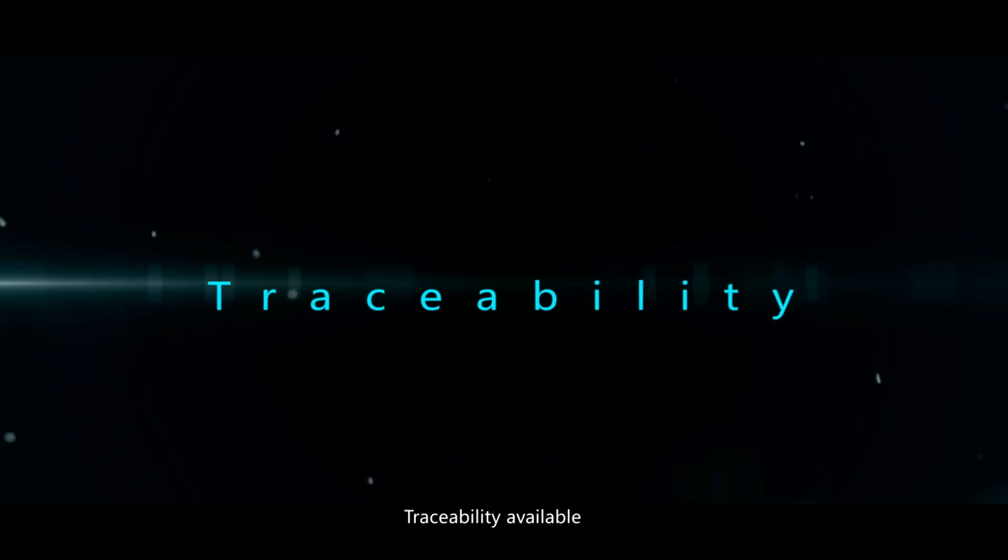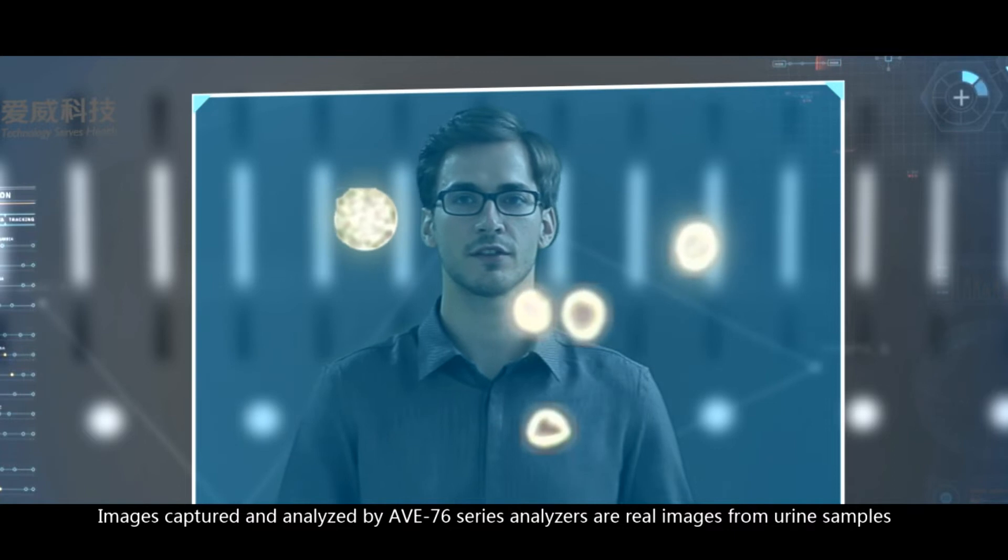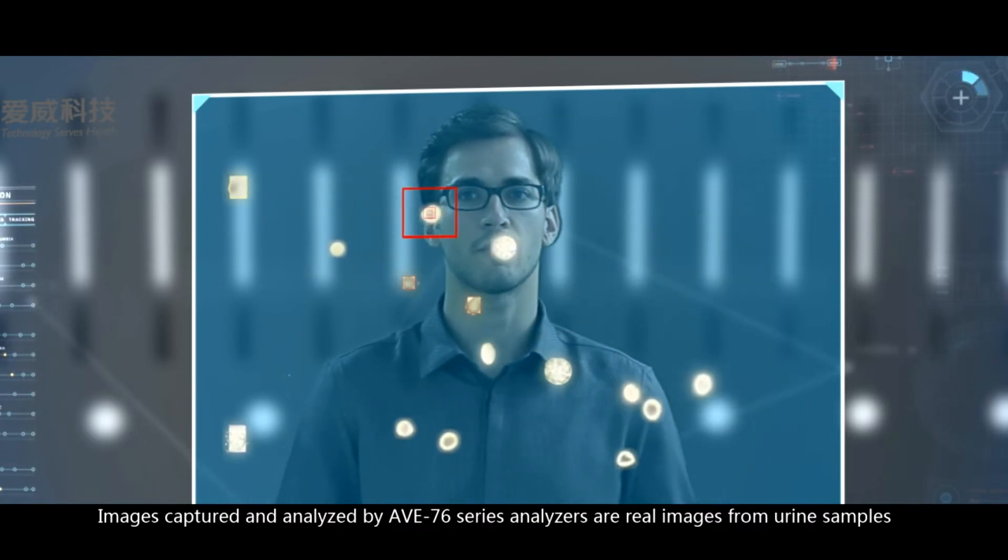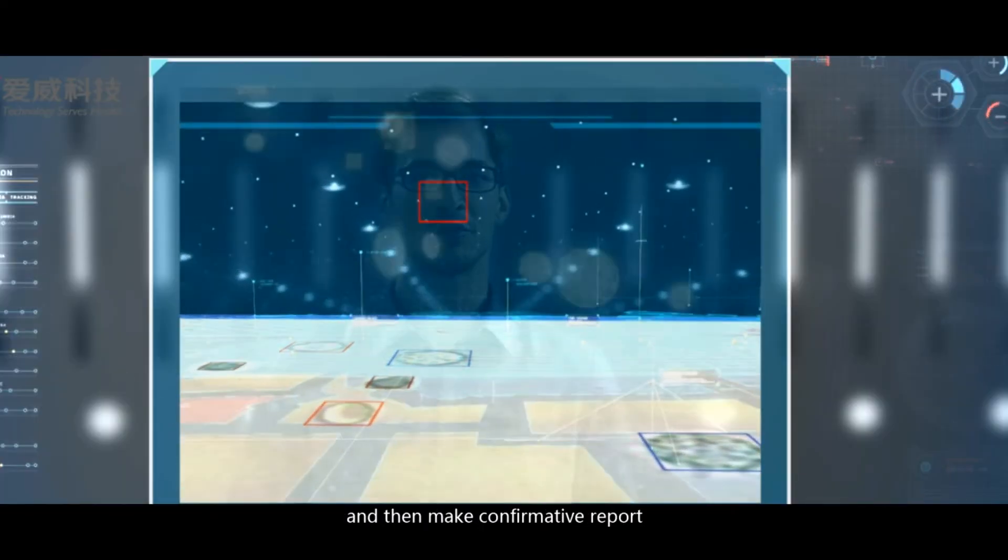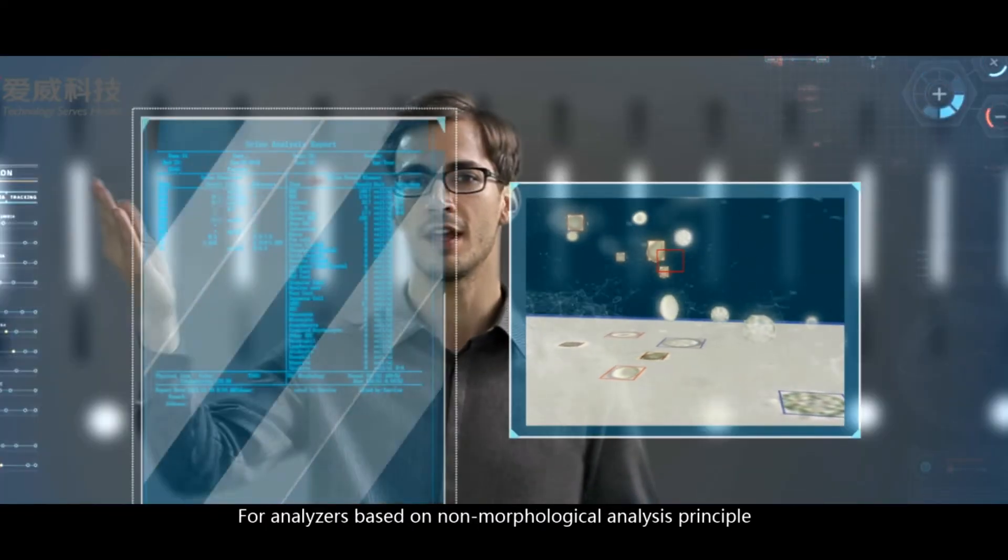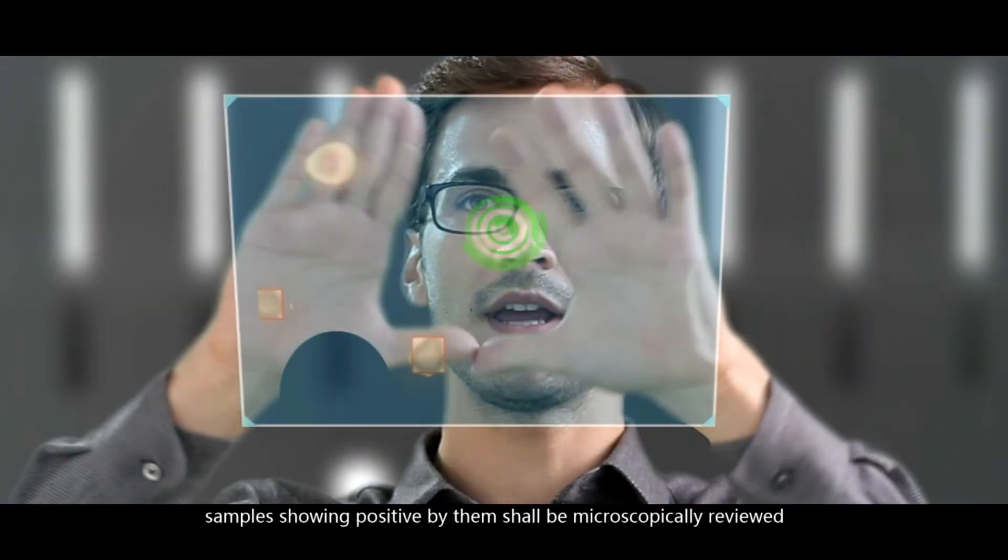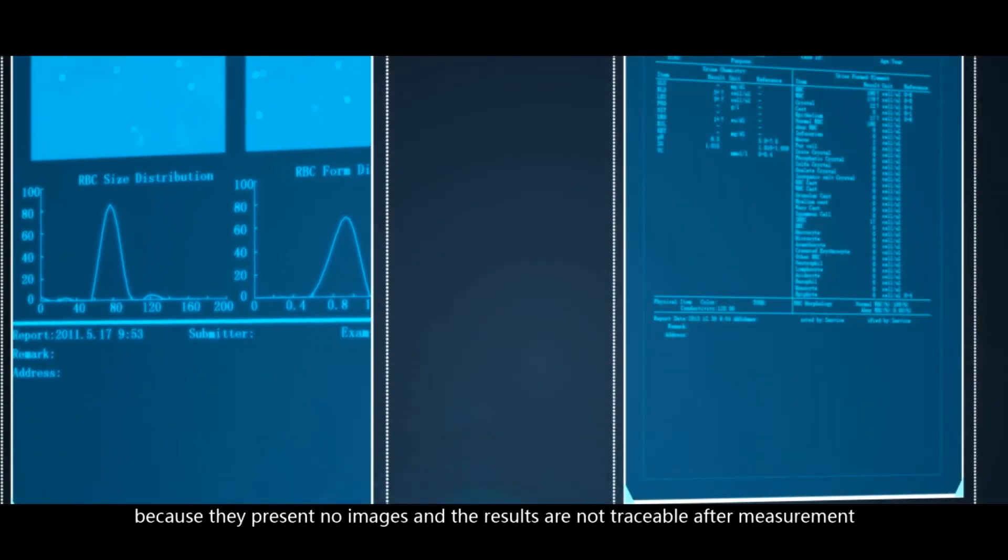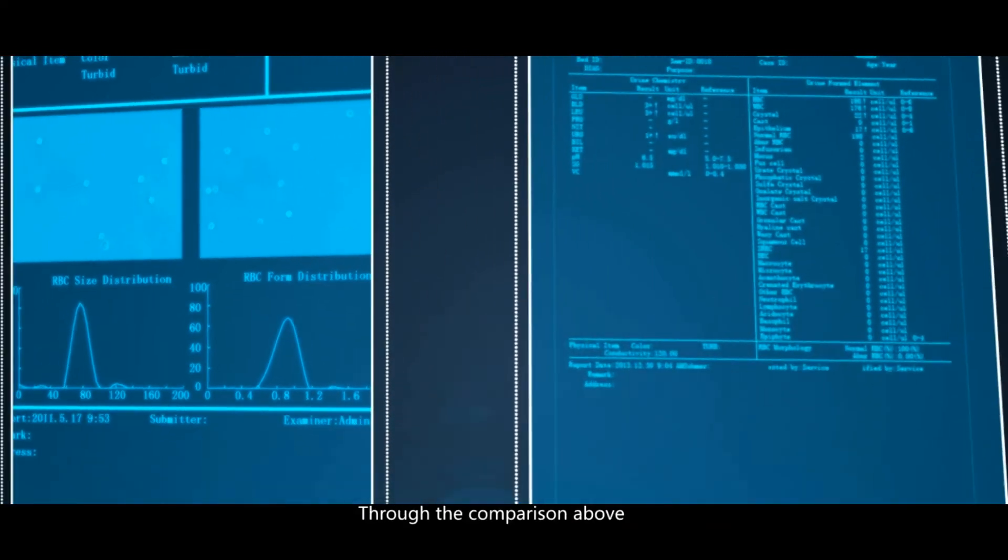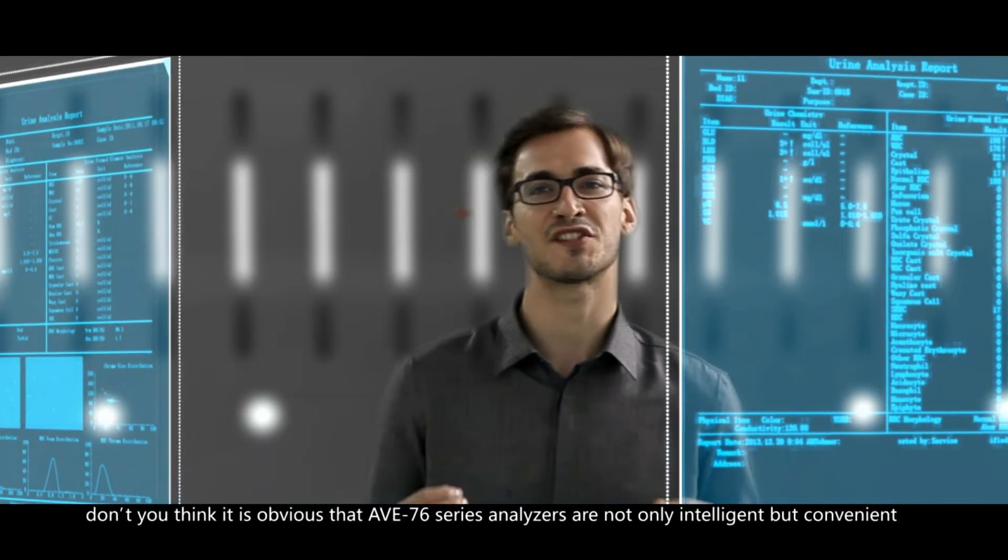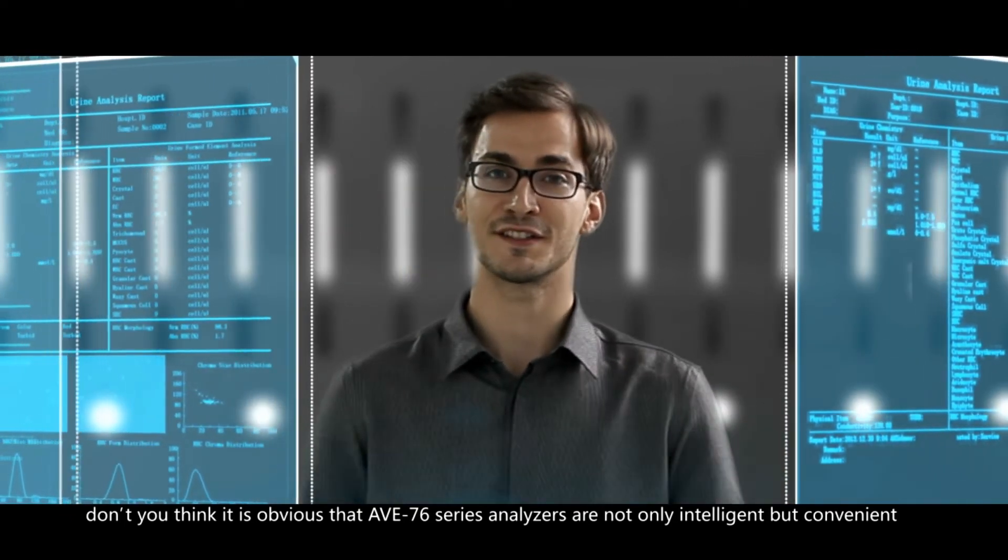Traceability available. Images captured and analyzed by AVI-76 series analyzers are real images from urine samples. You just need to review the suspicious targets presented on screen and then make a confirmative report for analyzers based on non-morphological analysis principle. Samples showing positive by then shall be microscopically reviewed because they present no images and the results are not traceable after measurement. Through the comparison above, don't you think it is obvious that AVI-76 series analyzers are not only intelligent but convenient?